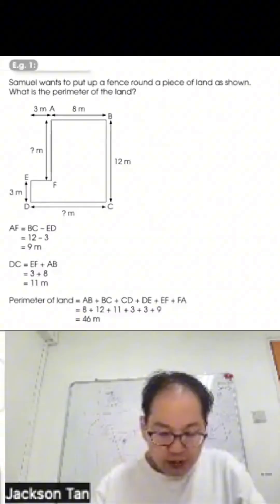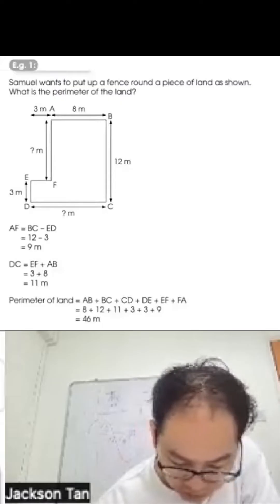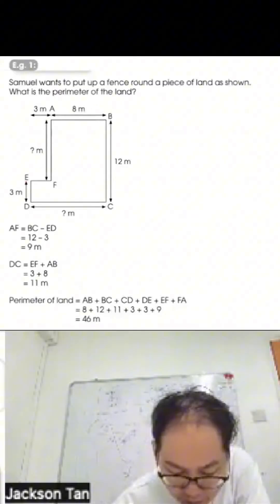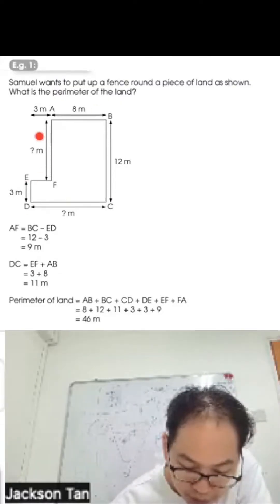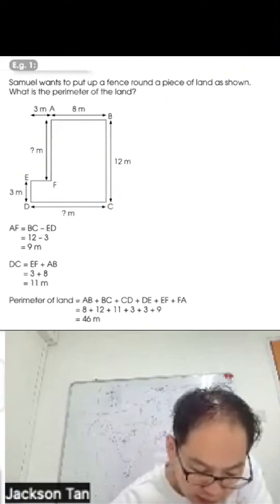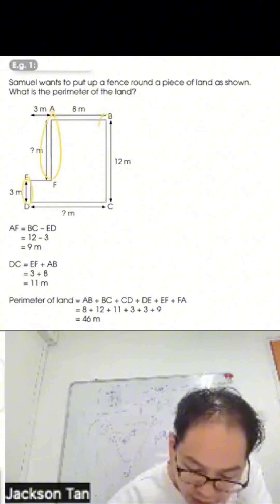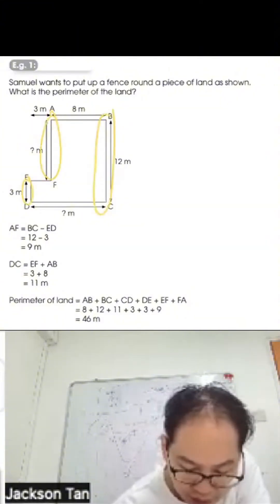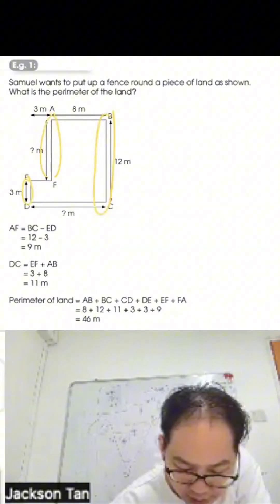Example 1: A farmer wants to put a fence around a piece of land. What is the perimeter? First we need to find the missing sides. This side equals 12 minus 3, which is 9 meters. Next, side DC is the sum of EF plus AB, so 3 plus 8 equals 11.